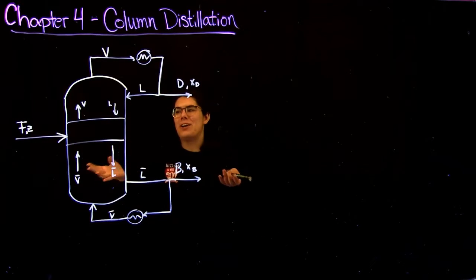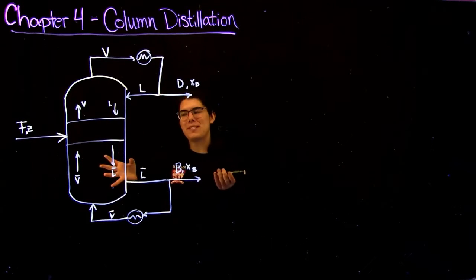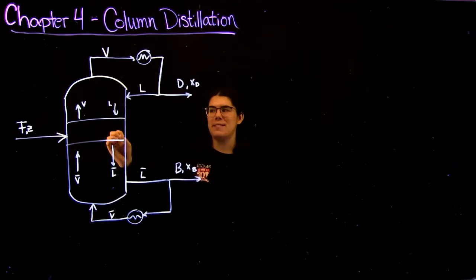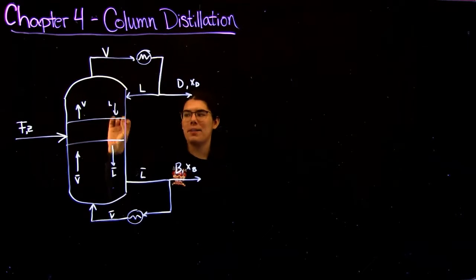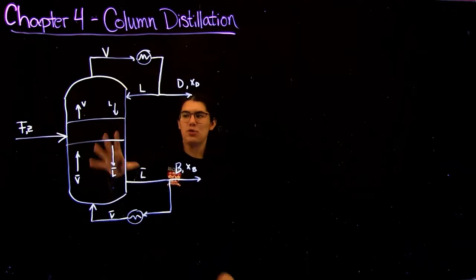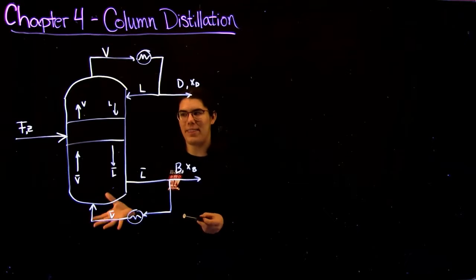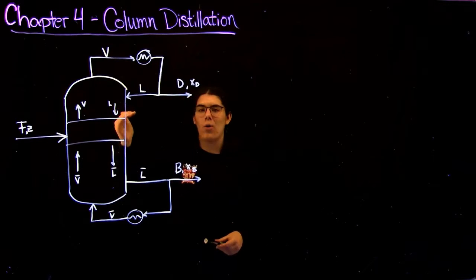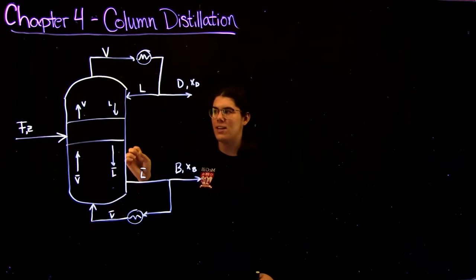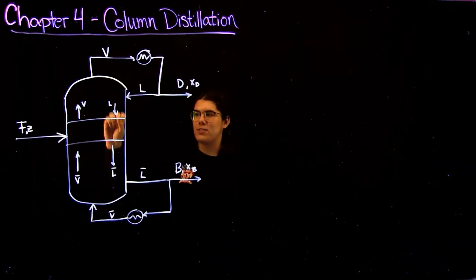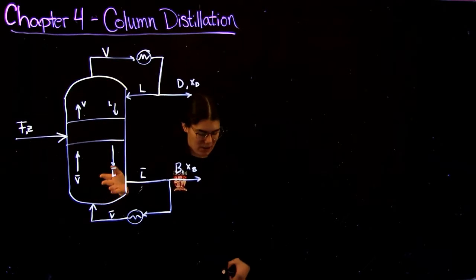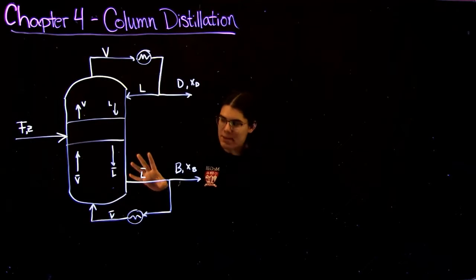So what is a distillation column? We discussed before what a flash drum is. A distillation column is simply a bunch of flash drums all stacked up in a column, if you want to think of it that way. Each drum, or stage as we call it in a distillation column, creates new separation, and things move up and down the column depending on their volatilities.